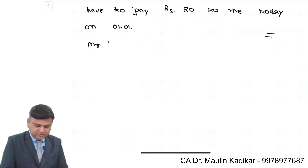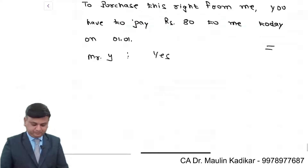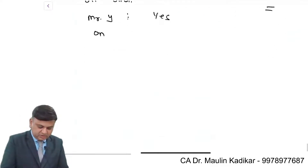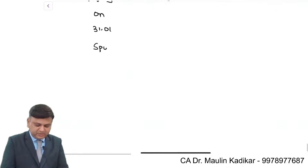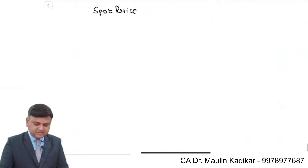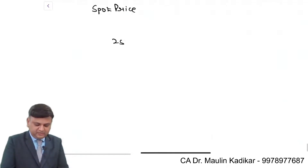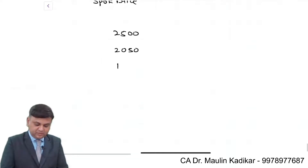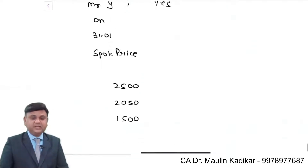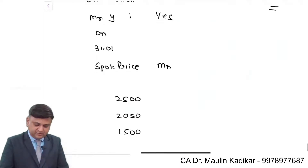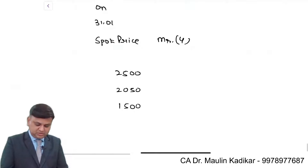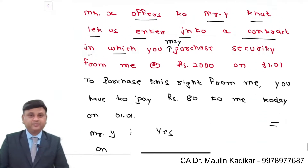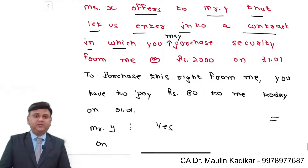Mr. Y thinks about this offer and says yes, he is ready for it. Now on 31st of January, suppose the spot price of the security is ₹2500, or ₹2050, or ₹1500. For each of these spot prices, we need to determine what would be the overall profit or loss to Mr. Y for entering into this transaction.